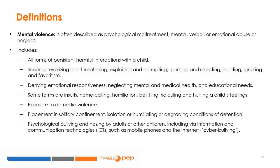A highly prevalent form of violence is psychological or mental violence, often described as psychological maltreatment, mental, verbal, or emotional abuse or neglect. Examples include all forms of persistent harmful interactions with a child: scaring, terrorizing, and threatening; exploiting and corrupting; spurning and rejecting; isolating, ignoring, and favoritism; denying emotional responsiveness; neglecting mental and medical health and educational needs; insults, name-calling, humiliation, belittling, ridiculing, and hurting a child's feelings; exposure to domestic violence; placement in solitary confinement or humiliating conditions of detention; and psychological bullying and hazing, including via mobile phones and the internet.